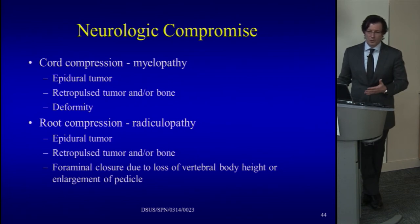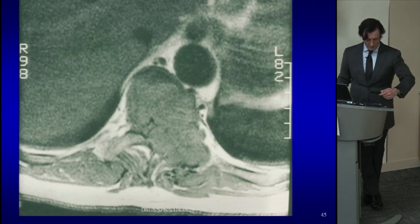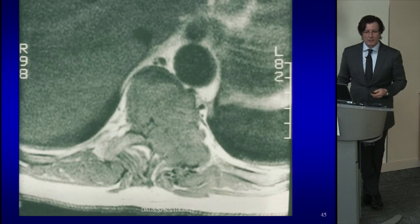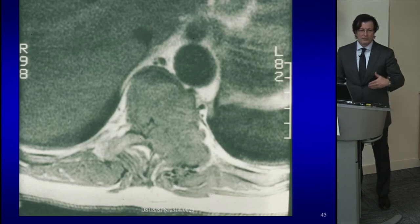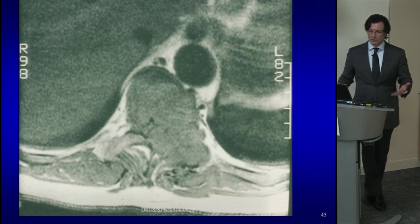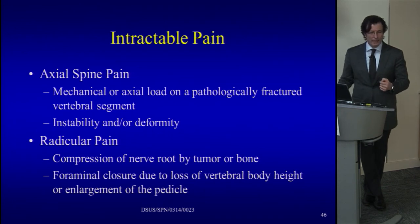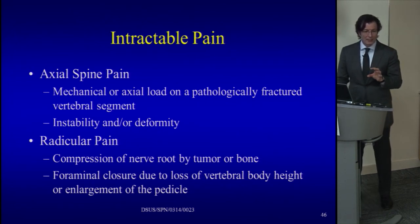With severe cord compression where you can barely see the spinal cord — it's just a thin strip surrounded by tumor — a neurologically weakening patient needs surgery if life expectancy is reasonable. Pain is also a criterion, specifically mechanical pain: pain that gets worse when standing or walking and goes away when lying down. That pattern tells you there's a fracture being loaded — something surgery can fix by providing stabilization.